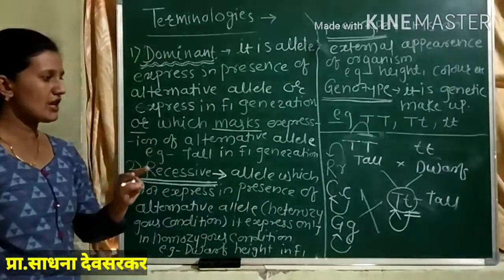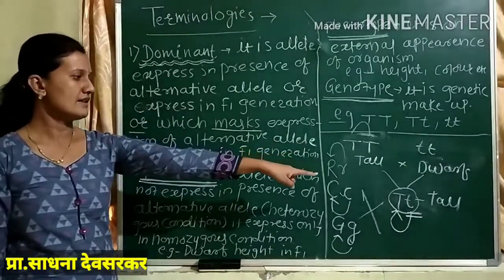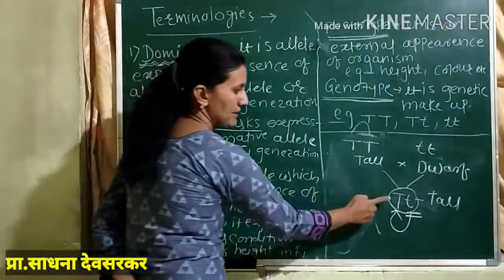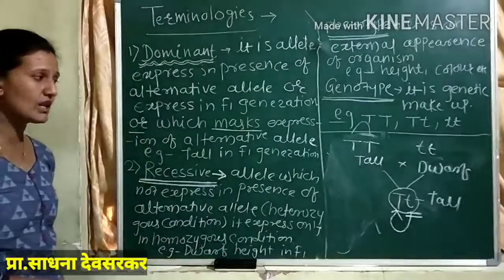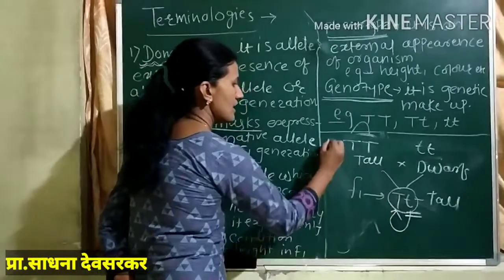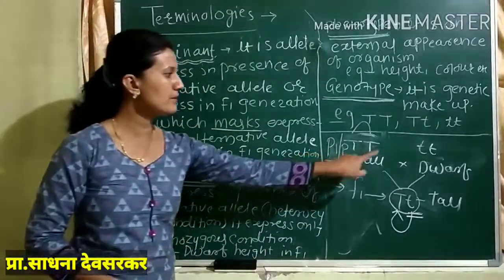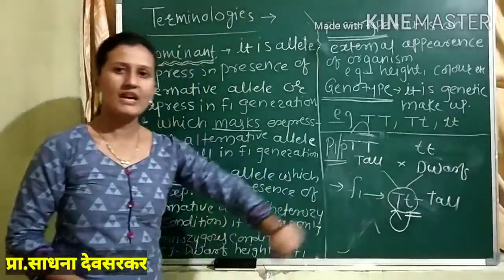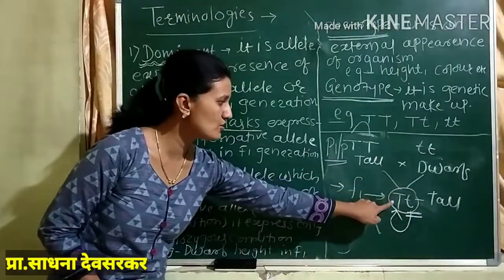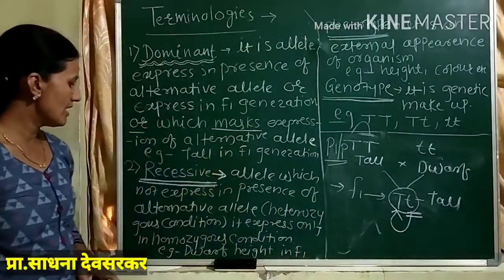When two different alleles are together, the recessive character — the alternative character — is not expressed. Small t is not expressed in the presence of capital T. Or: the allele which is not expressed in F1 generation. When there is a cross between pure tall and pure dwarf, in F1 generation tall is expressed but dwarfness is not expressed. The allele which does not express in the presence of its alternative allele — small t, when capital T is present — that we call recessive.